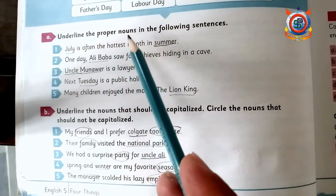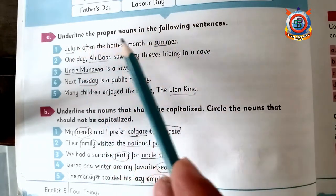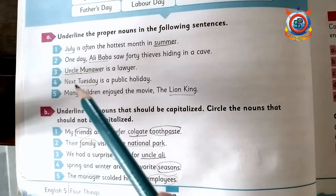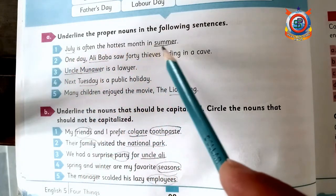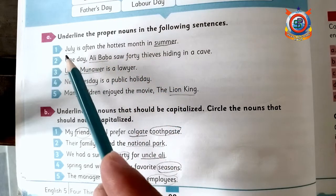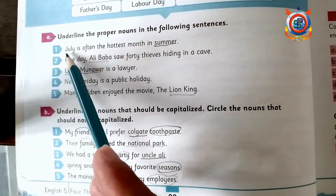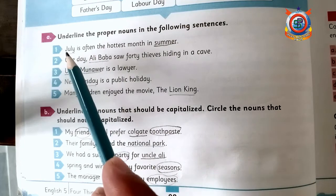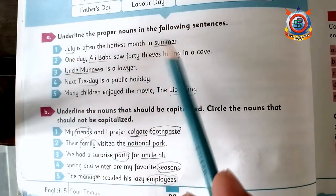Question number A: Underline the proper nouns in the following sentences. First sentence: 'July is often the hottest month in summer.' Here there are two proper nouns — one is July and one is summer.